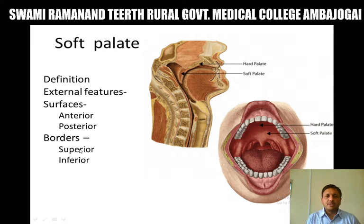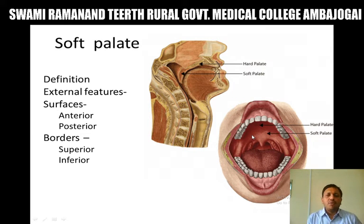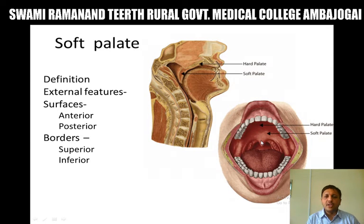Borders of the soft palate: it shows a superior border and an inferior border. The superior border of the soft palate is attached to the posterior border of the hard palate, and along its lateral aspects it blends with the walls of the pharynx. The inferior border of the soft palate is free, and in its median plane shows one conical projection known as the uvula. In Latin, the meaning of uvula is 'a small grape.'